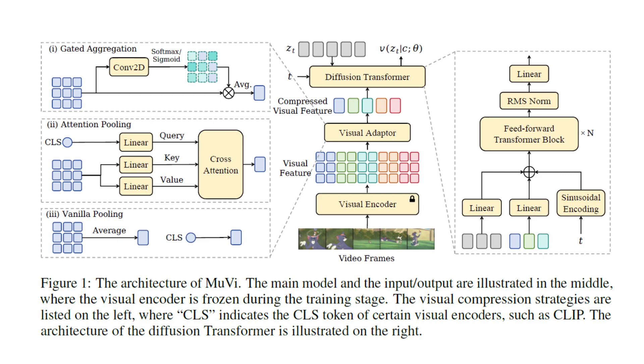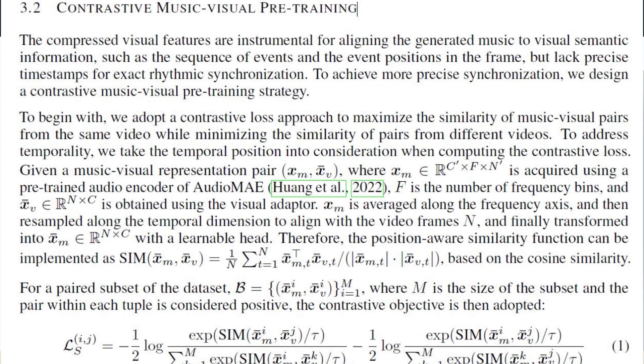One of the coolest things about MU-V is its use of contrastive pre-training. This helps the model learn to recognize rhythmic patterns in videos and synchronize the music perfectly — it's like teaching the model to feel the beat of the visuals.